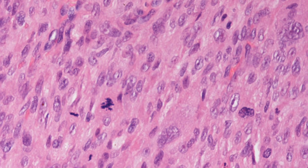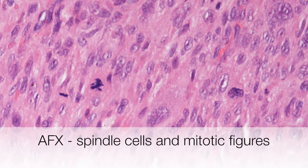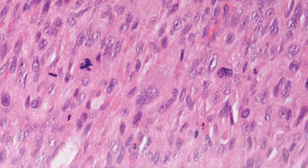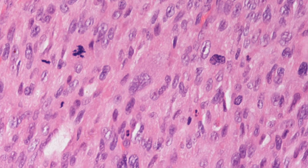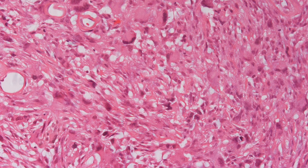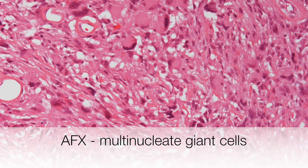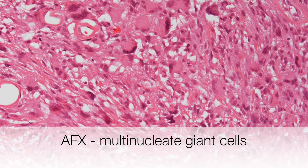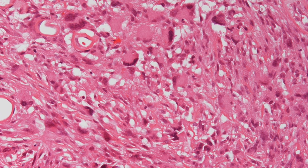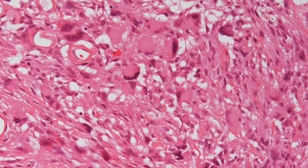On higher power, this part of the tumour shows lots of spindle-shaped cells with rather pleomorphic nuclei and quite frequent mitotic figures. And here the tumour looks cytologically horrid, again with a lot of nuclear pleomorphism and several multinucleate giant cells.